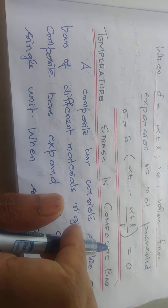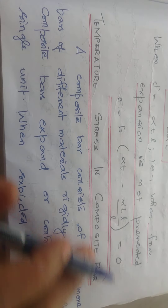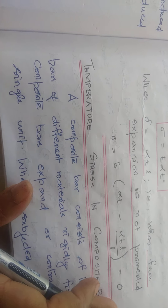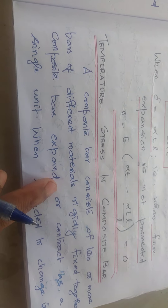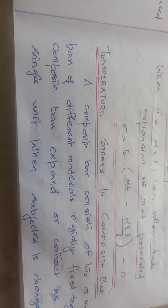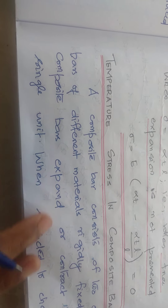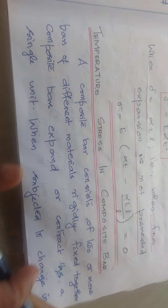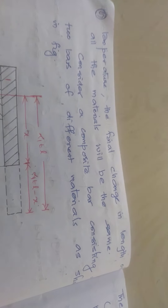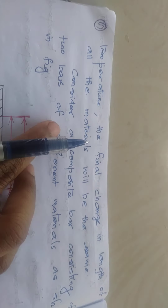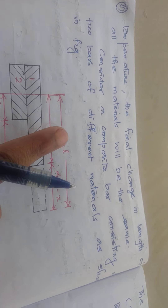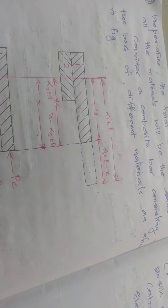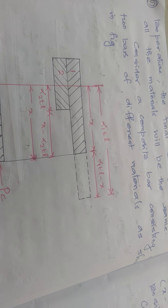We will see temperature stresses in composite bars. A composite bar is a combination of two different bars of different materials rigidly fixed together. Composite bars expand or contract as a whole, as a single unit, when subjected to a change in temperature. The final change in length of all the materials will be the same. This is a composite bar consisting of two bars of different materials as shown in the figure.